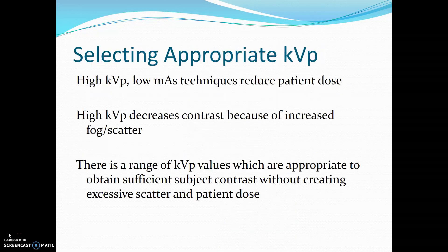High KVP, low mAs techniques reduce patient dose. High KVP decreases contrast because of the increased amount of fog and scatter. There is a range of KVP values which are appropriate to obtain sufficient subject contrast without creating excessive scatter and patient dose.